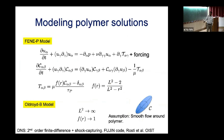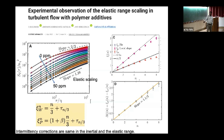The remark: if the f(α) spectrum is the same, then also the exponents are the same—it's not only the corrections. The response: what I'm pointing out is that the main scaling comes from the average value of energy dissipation; if the fluctuations are identical, the corrections are the same. One more question, then we'll direct the speaker again. Thank you.